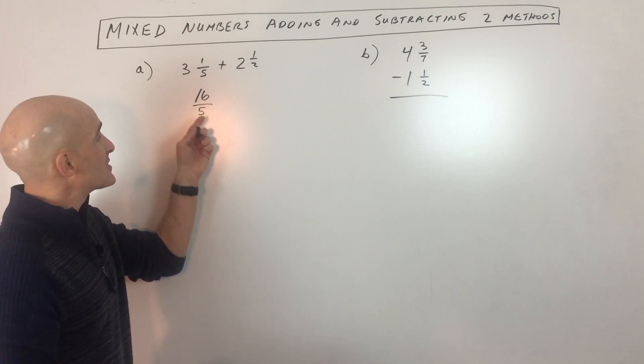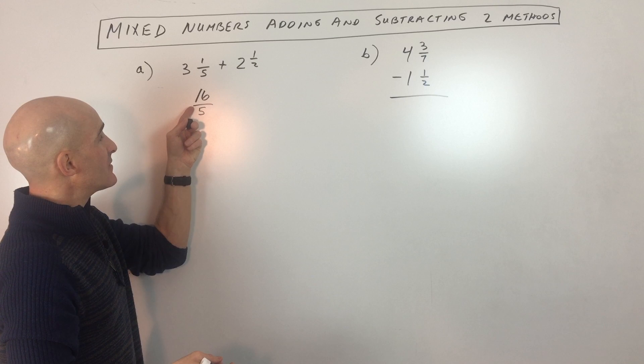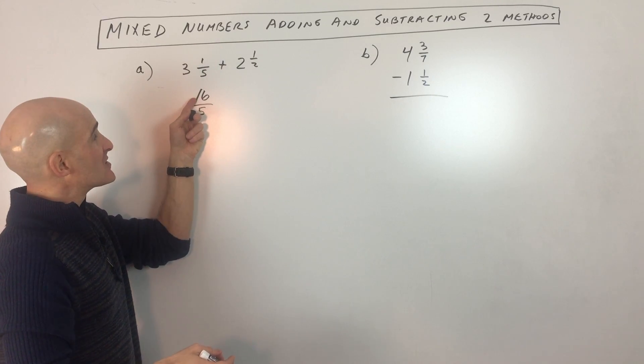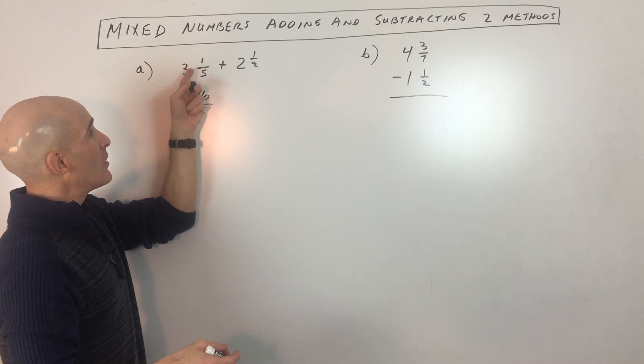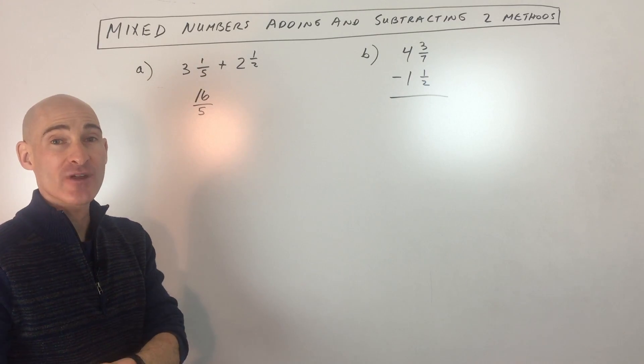Now if you want to check your work, you can always take this and say, well, this is like 16 divided by 5. Five goes into 16 three whole times with one left over. So that's how you get the three and one-fifth back, right?